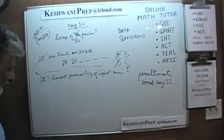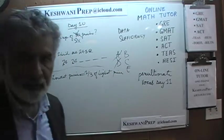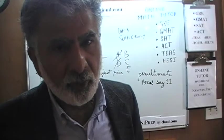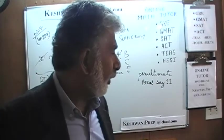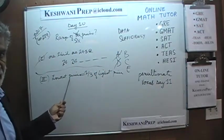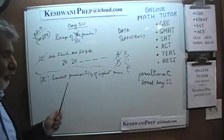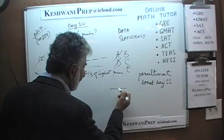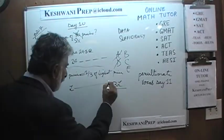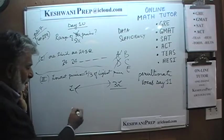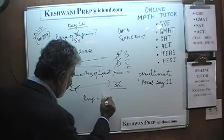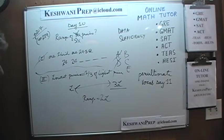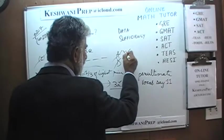Simply knowing that the lowest price is one third of the highest price does not enable us to ascertain what the range is. All this tells us is that the range must be two times the lowest price — 3L minus 1L. But that doesn't tell us what the range actually is. The answer cannot be B.